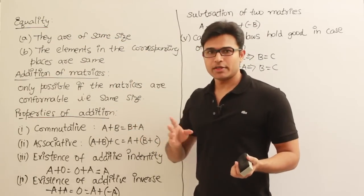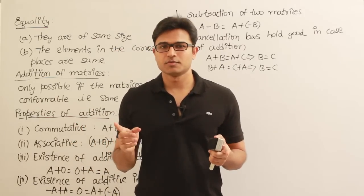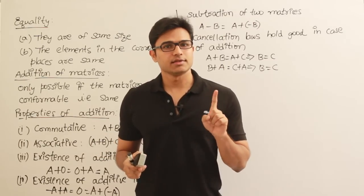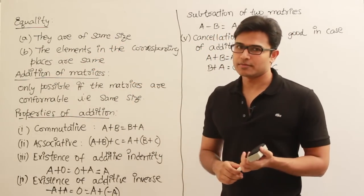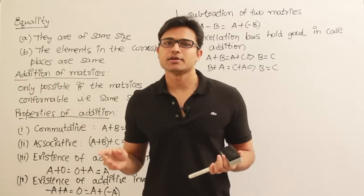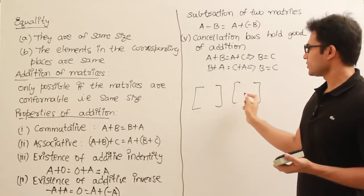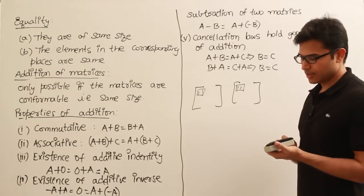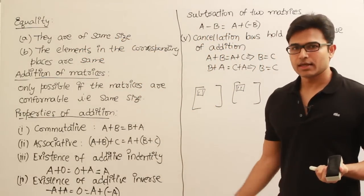Two matrices are said to be equal when the following rules hold. First, they have to be of the same size — if one matrix is 3×3 then the other also has to be 3×3. Second, the elements in the corresponding places must be the same. For example, the element at row 1, column 1 of one matrix must equal the element at row 1, column 1 of the other matrix. These are called corresponding elements.